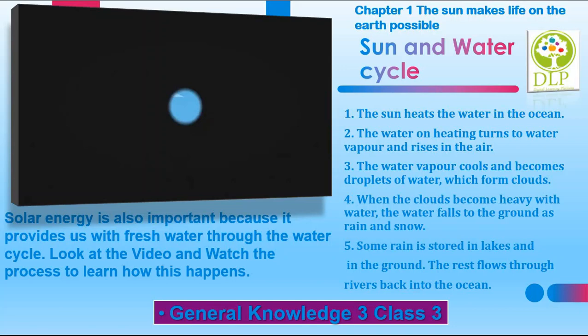Step 3: The water vapor cools and becomes droplets of water, which form clouds. Step 4: When the clouds become heavy with water, the water falls to the ground as rain and snow. Step 5: Some rain is stored in lakes and in the ground, and the rest flows through rivers back into the ocean.